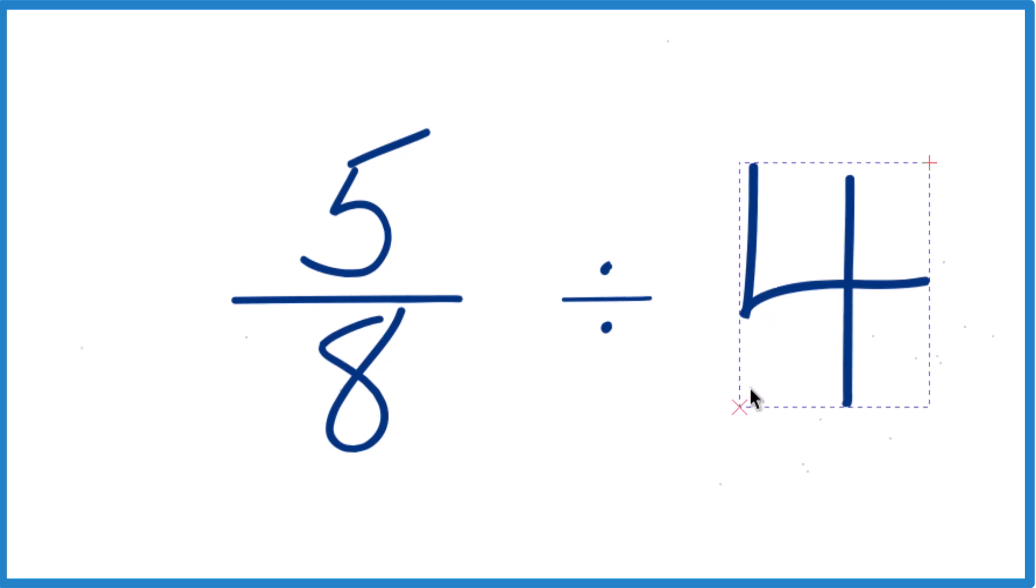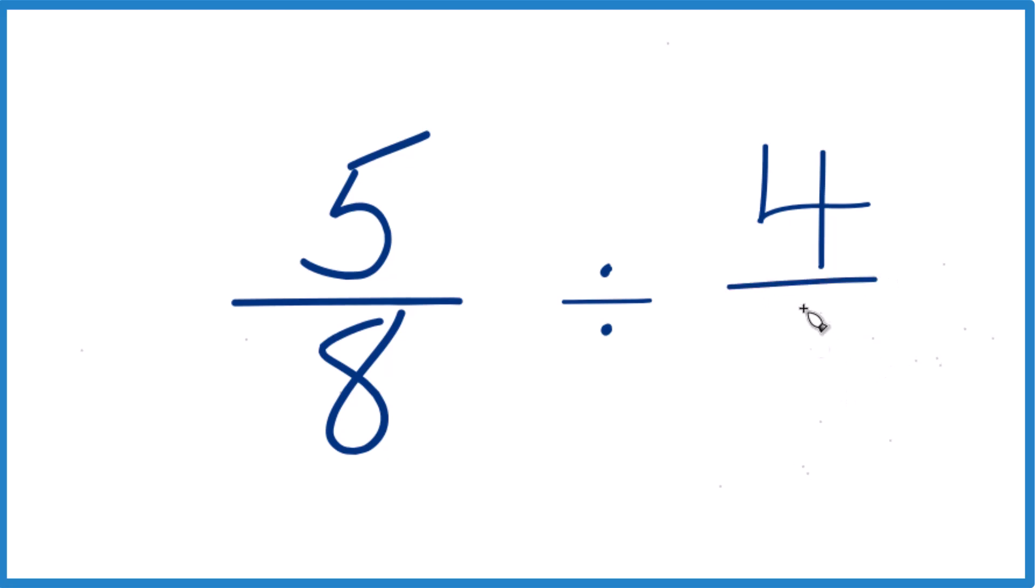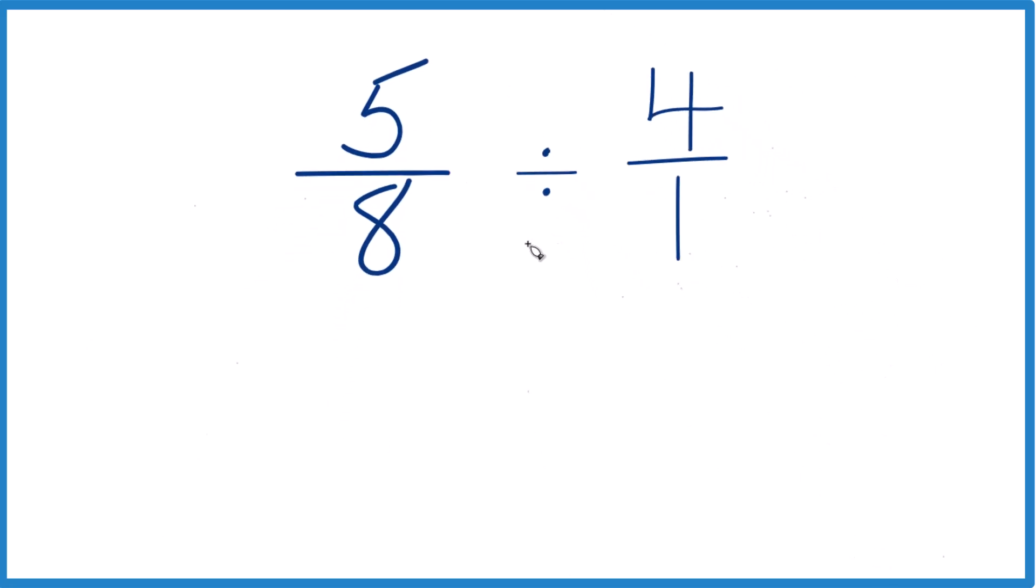For the 4, let's just call this 4 over 1. 4 divided by 1, that's still 4, but now everything's lined up.